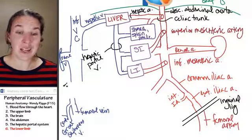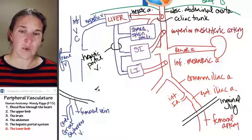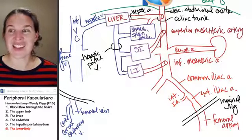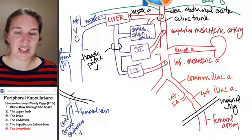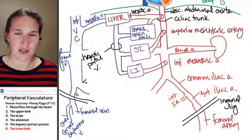The femoral vein, once it does that, okay, I'm going to try and do this. I don't know if I'm going to have enough room. So once it passes through, it becomes the external iliac, which combines with the internal iliac to form the common iliac. Okay, there. How was that? I'm trying to fit it all in there.